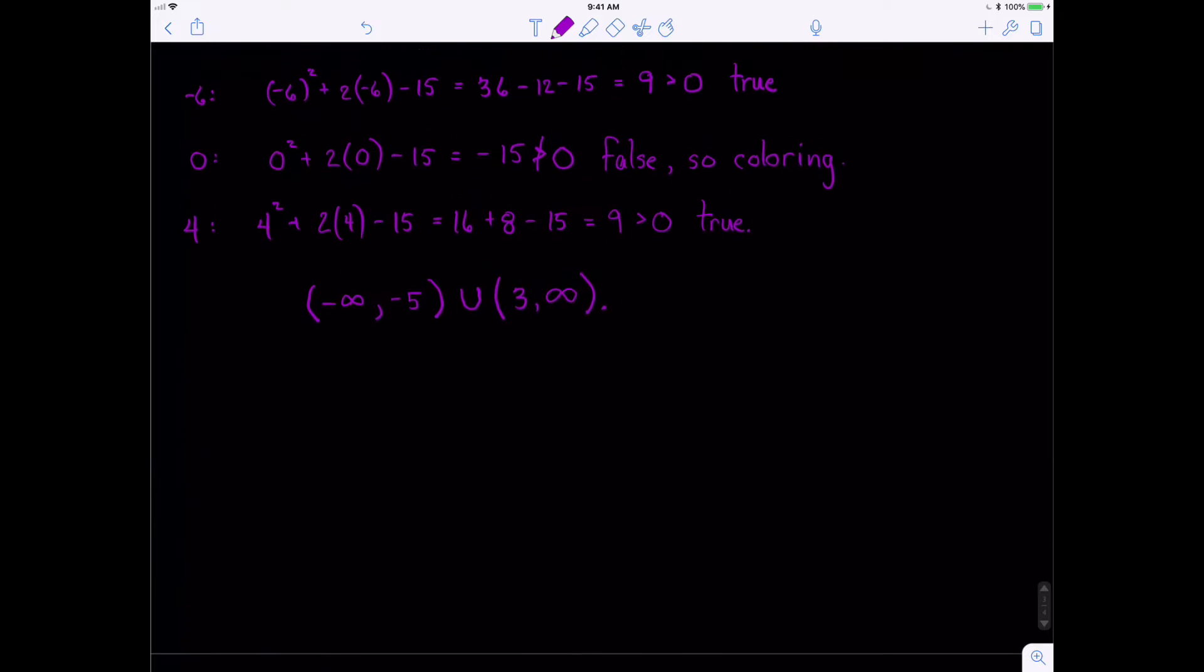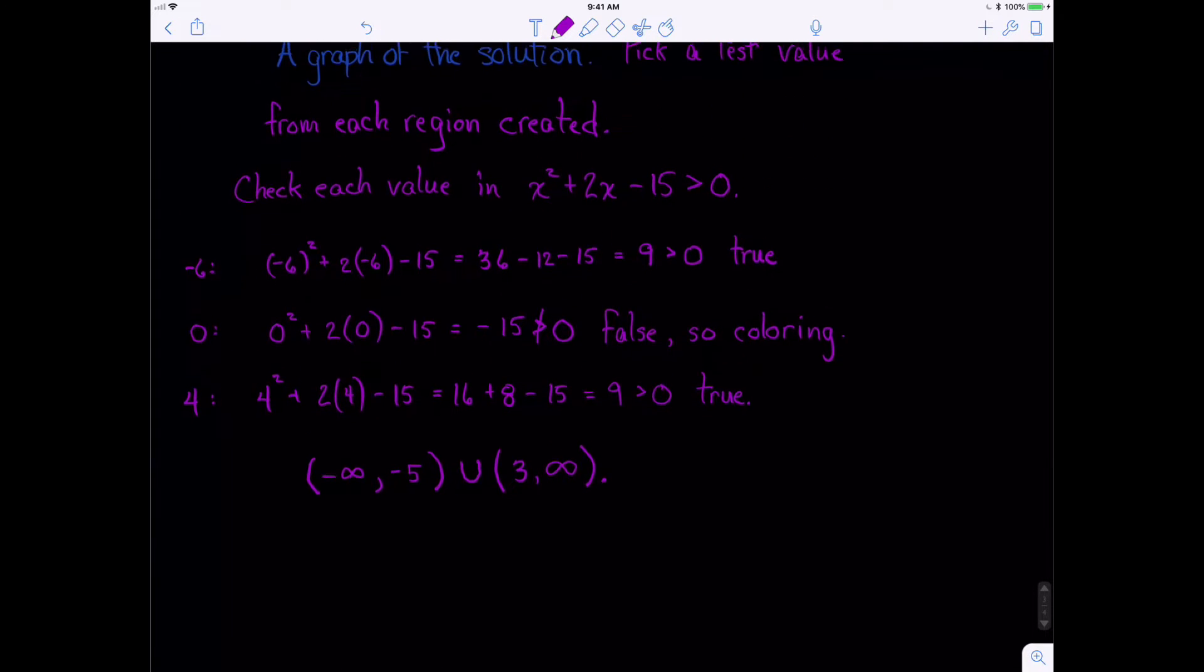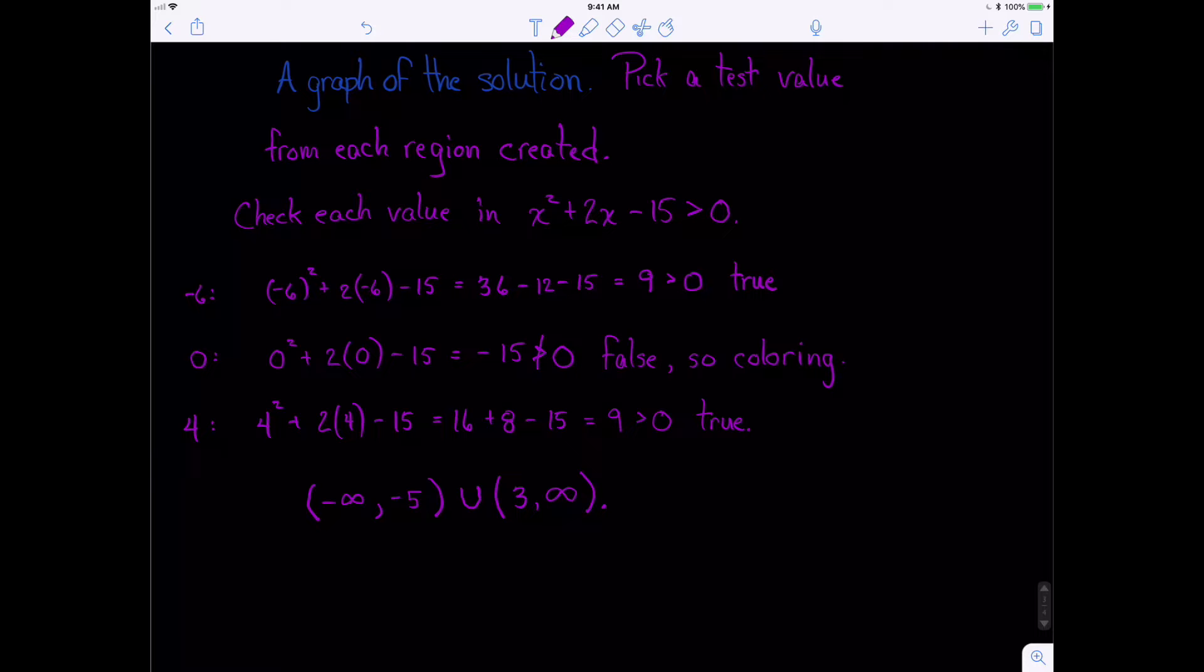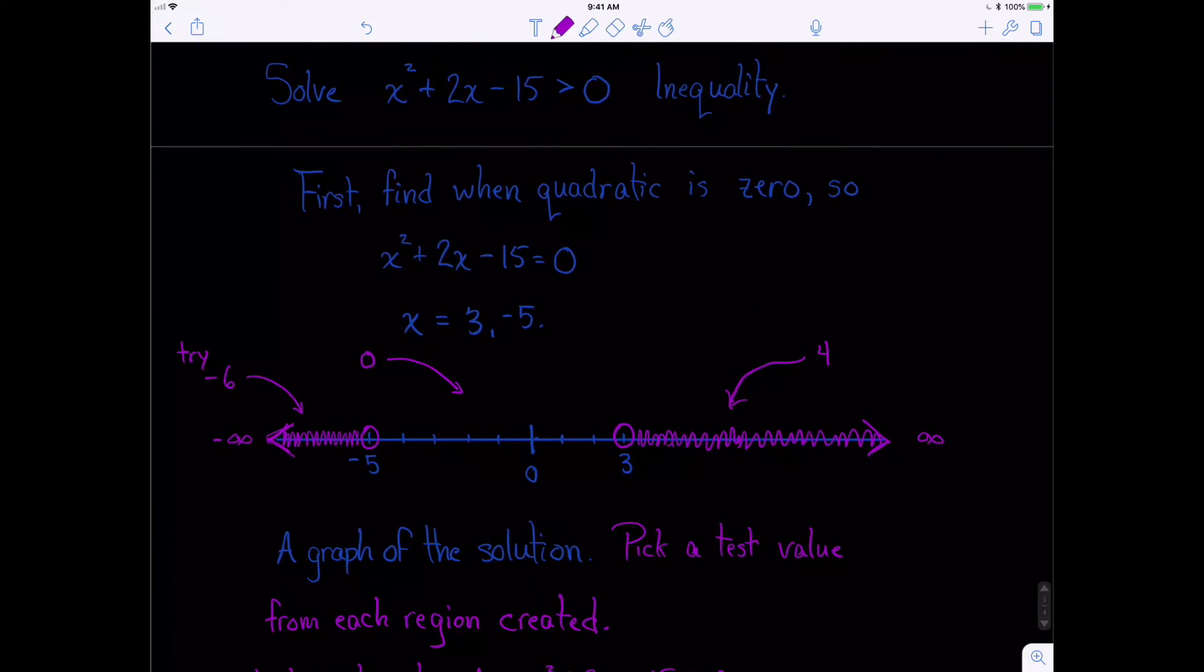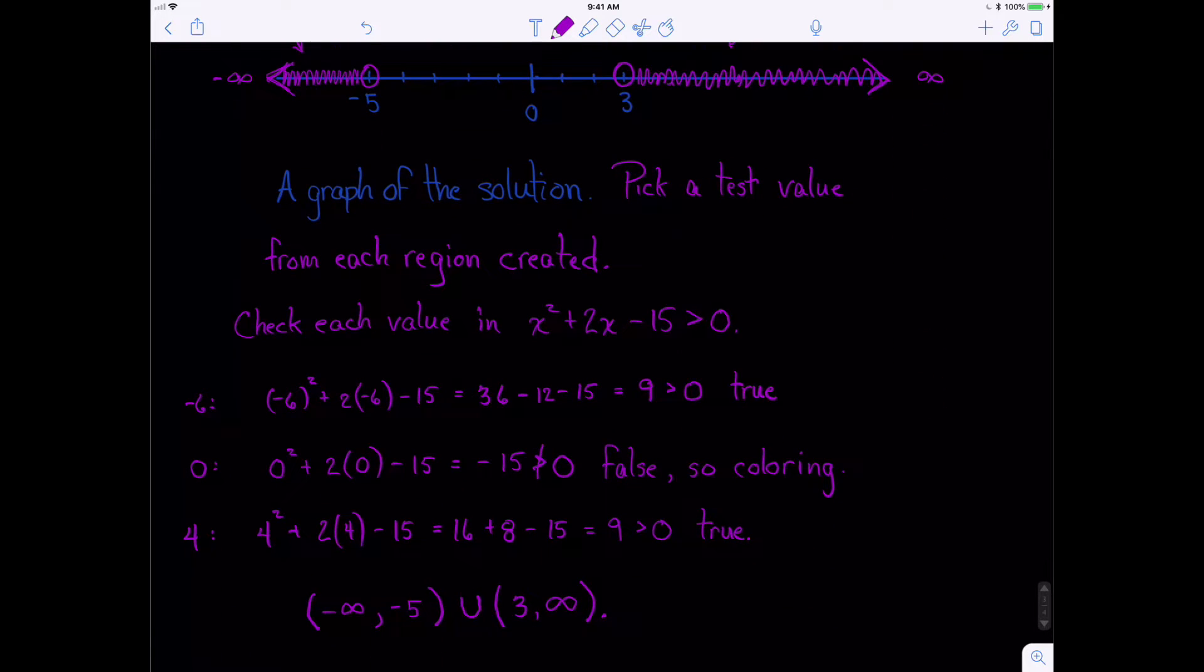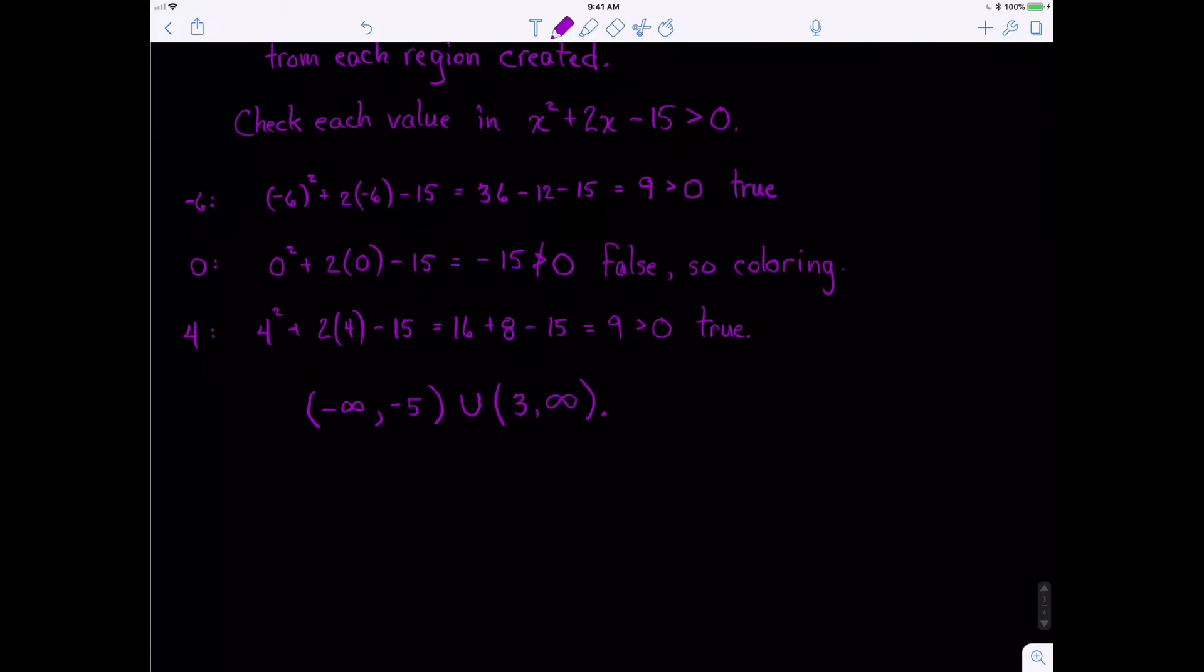Hi. In this video, I want to continue reviewing our solution for just a moment that we got when we solved the problem of where x squared plus 2x minus 15 is greater than 0. And we came up with this graphical solution with answers of negative 6, 0, and 4 being our test solutions. And then we came down here and we tested each one.